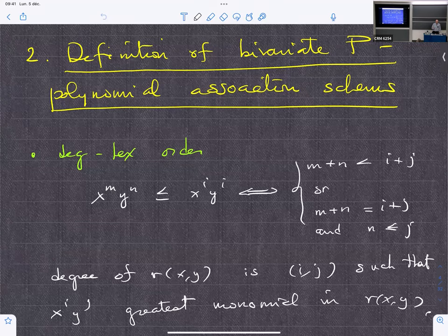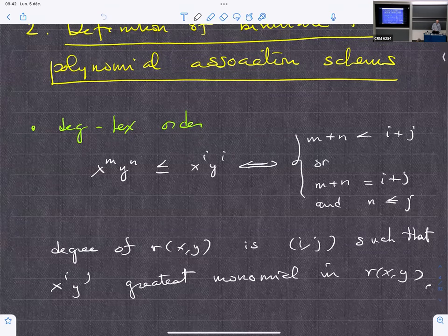The goal is to replace, in the definition of certain classes of association schemes called P-polynomial, ordinary univariate polynomials by bivariate, eventually multivariate. Now, association schemes can be defined like this.